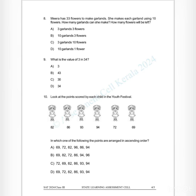Question 10: Look at the points scored by each child — 82, 86, 93, 94, 72, 69. Which of the following shows the points arranged in ascending order? A) 69, 72, 82, 96, 86, 94; B) 69, 82, 72, 72, 96, 96; C) 72, 69, 82, 86, 93, 94; D) 69, 72, 82, 86, 93, 94. Answer: D) 69, 72, 82, 86, 93, 94.